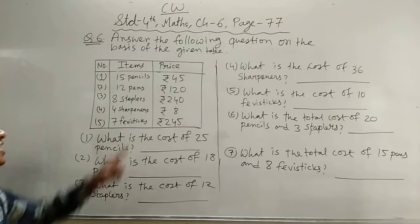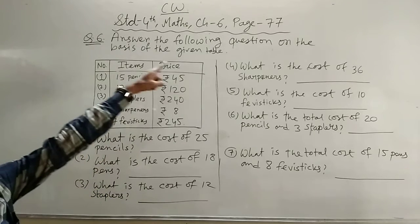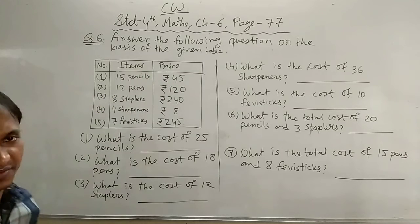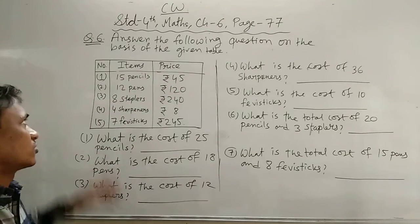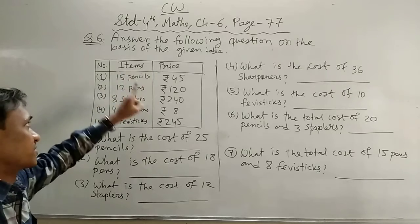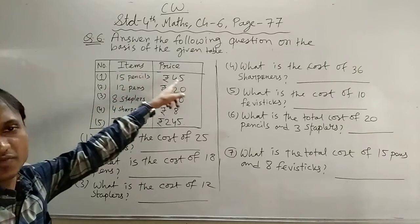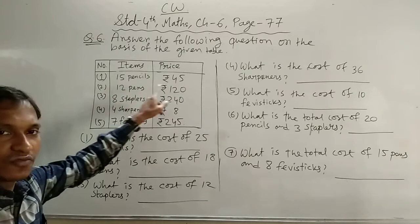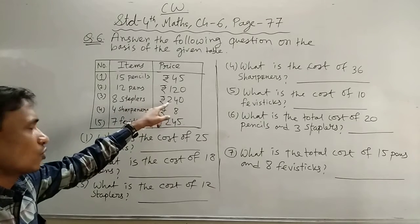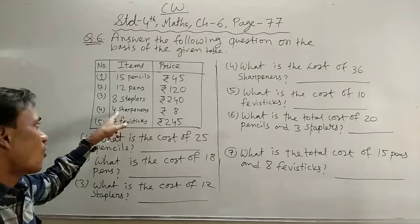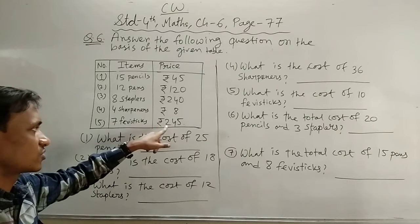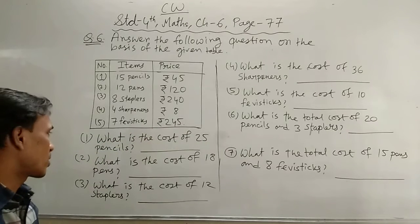Now let's start. Question number 6: Answer the following questions on the basis of the given table. Students, this is the table — items and types: 15 pencils for 45 rupees, 12 pencils for 120 rupees, 8 staplers for 240 rupees, 4 sharpeners for 8 rupees, 7 fevisticks for 245 rupees.